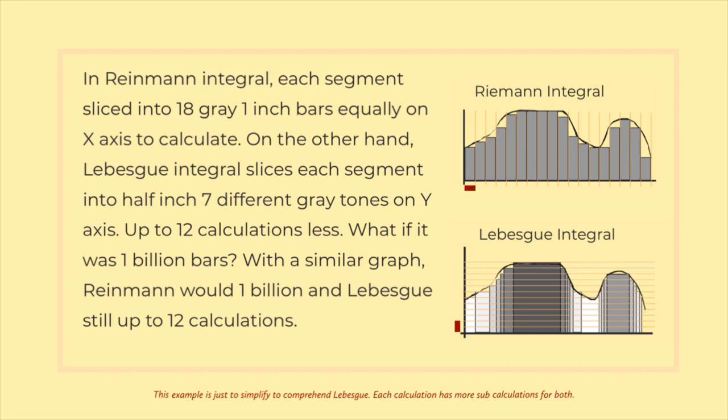What if it was 1 billion bars? With a similar graph, Riemann would have 1 billion calculations, while Lebesgue still has up to 12 calculations.